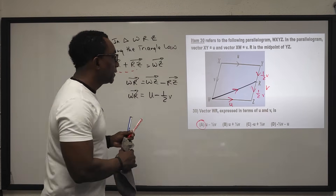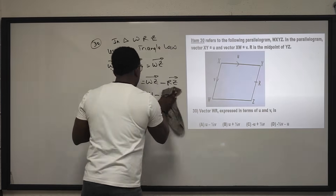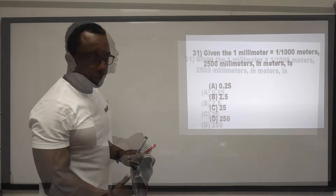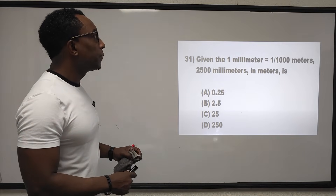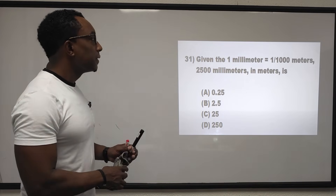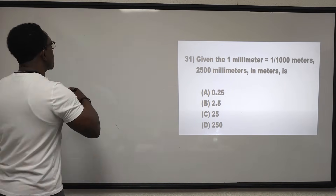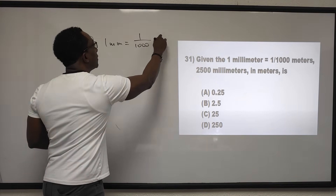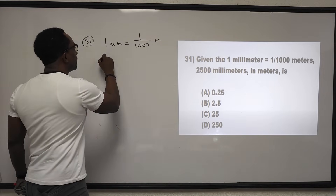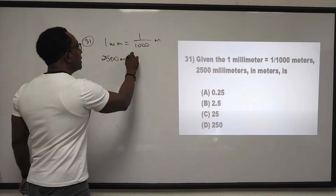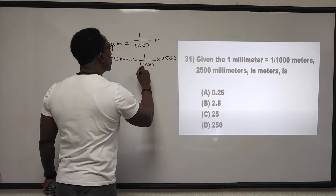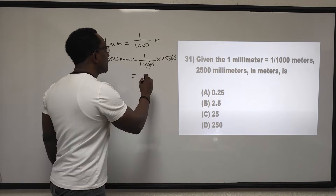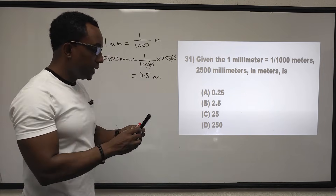Question 31: given that 1 mm equals 1 over 1,000 meters, then 2,500 mm in meters is 2,500 over 1,000 equals 2.5 meters. The answer is B.